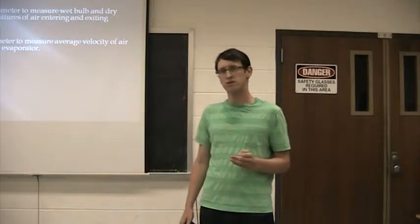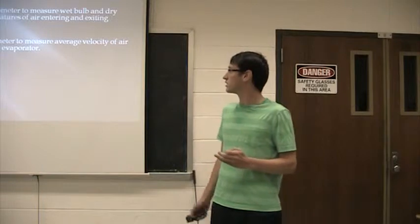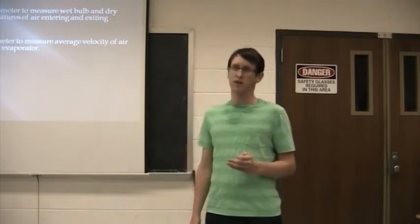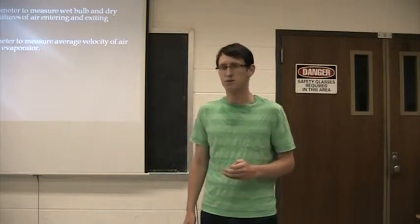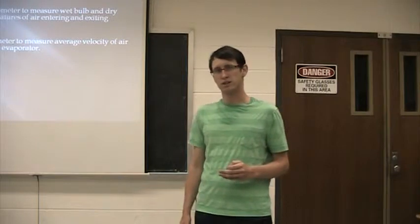Then, one group is going to use the psychrometer and the anemometer. They're going to measure the dry-bulb and wet-bulb temperatures at four points that I showed earlier. And then, also, they're going to use the anemometer to measure the velocity going in so that they can get a mass flow rate.